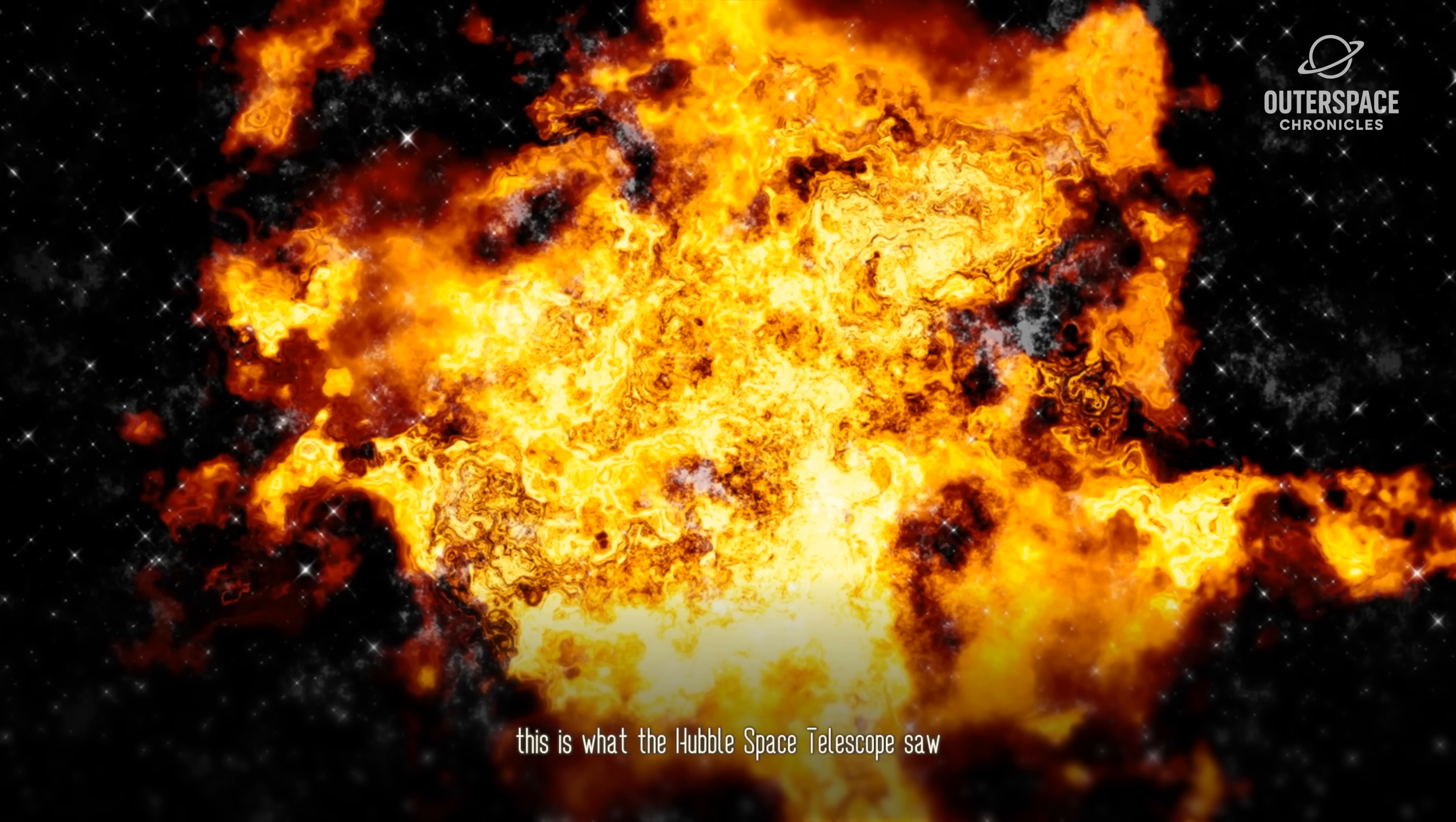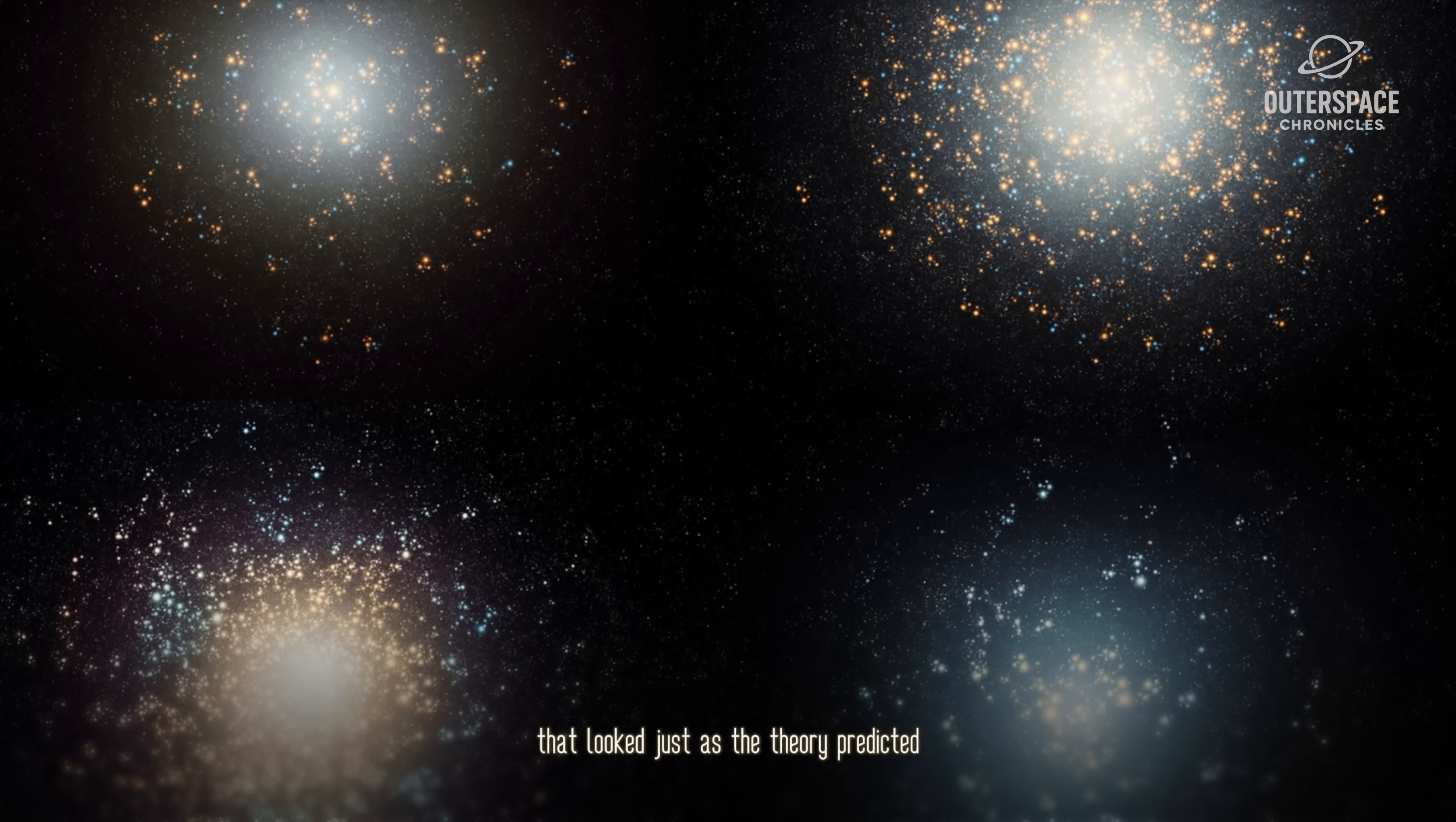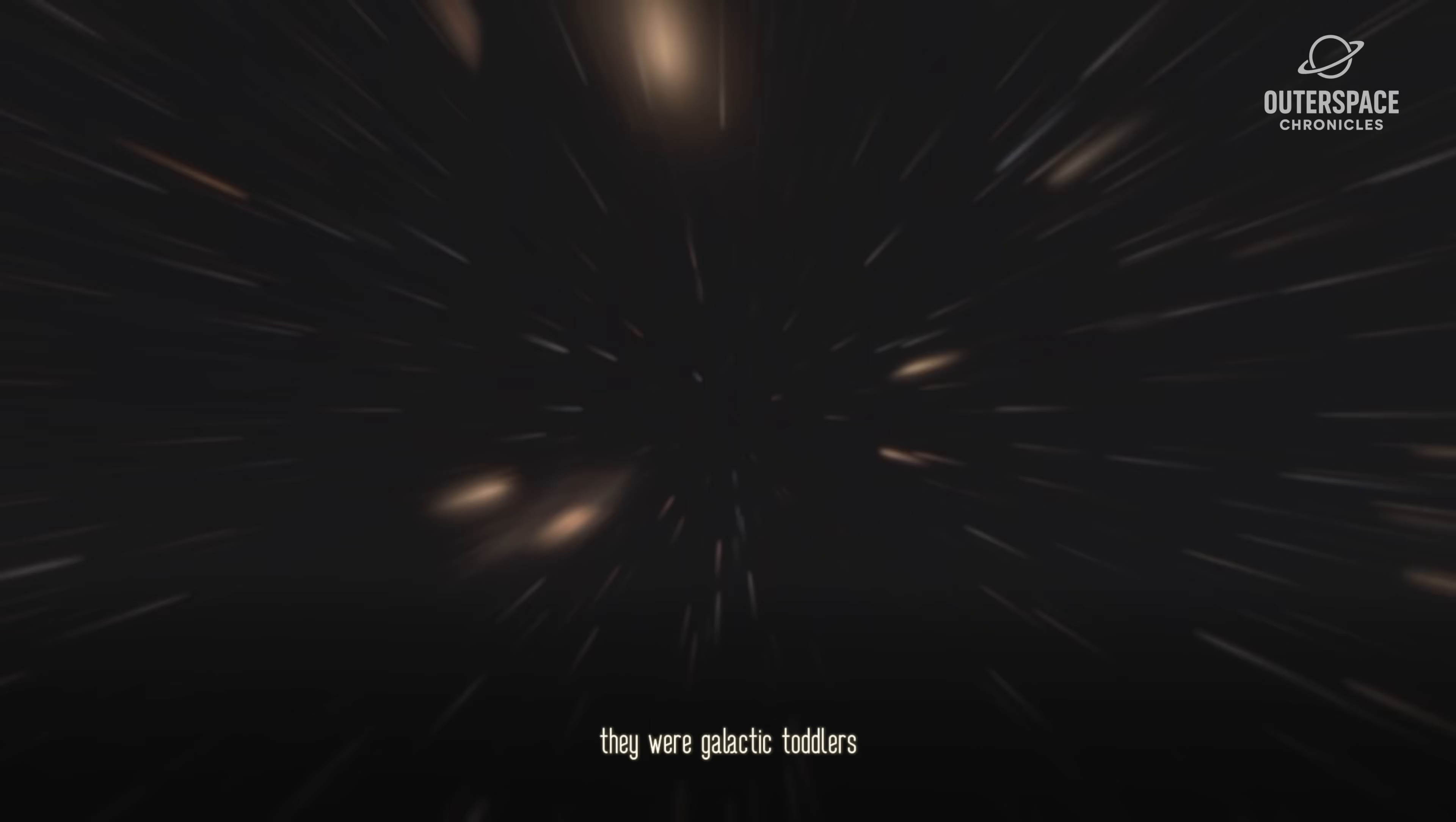This is what the Hubble Space Telescope saw. It showed us galaxies from when the universe was less than a billion years old that looked just as the theory predicted. Small, disorganized, and faint. They were galactic toddlers.